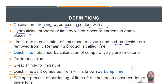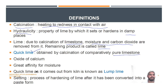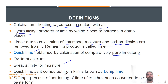Then comes quick lime. It is obtained by calcination of comparatively pure limestone. There may be questions in public service examinations from these sections. The lime obtained by calcination of pure limestone — Option A: quick lime, Option B: lump lime, Option C: slaked lime — quick lime is the right answer. Pure limestone calcination gives quick lime. Quick lime has a greater affinity for moisture.